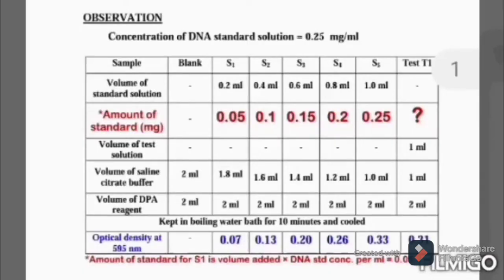This is the observation column. You can see the volume of reagents added given in the first column. In the last row, ODs of standards and test T1 are given in the second row. Amount of standard added are given, which is actually the value of standard concentration 0.25 multiplied by the volume of standards added in ml's to each tube. This is explained in a footnote. Now we are using the values of standard 5, S5, and T1 for further calculation. You may pause this and study well.